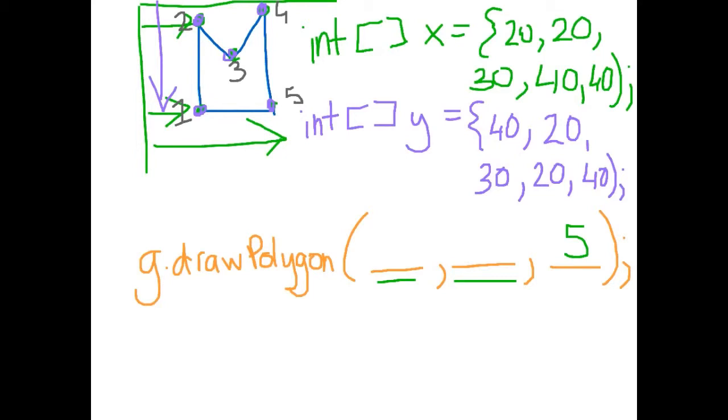Now in my actual line of code, in my g.drawPolygon, I give the x array, and in the second one, I give my y array.